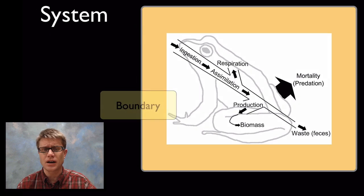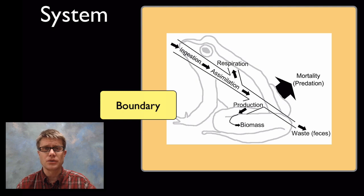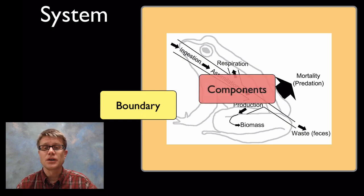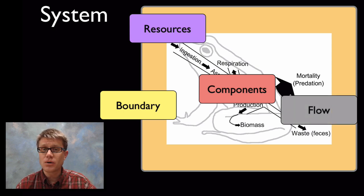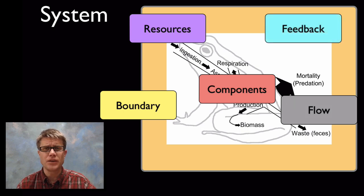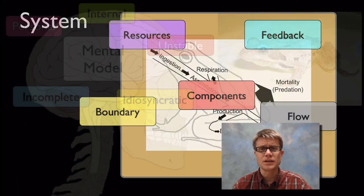There are a few characteristics that they have. First of all you're going to have a boundary, in other words a boundary between the universe and your system. You're going to have components or the parts. In this case it would be parts of the frog. You're going to have resources that move in or matter that moves in, and energy that moves into the system. You're going to have flow of that material, and sometimes it's recycled. And then you're going to have some kind of a feedback mechanism that allows it to remain at stasis.